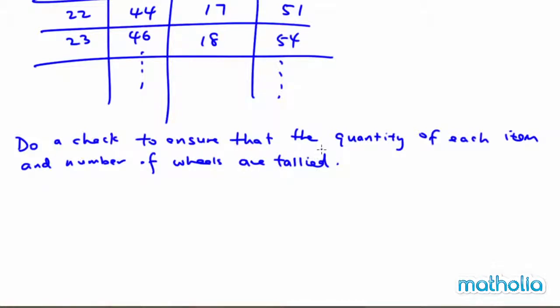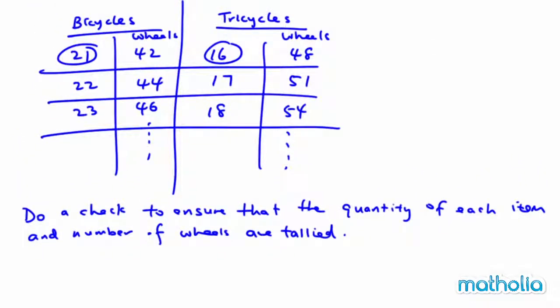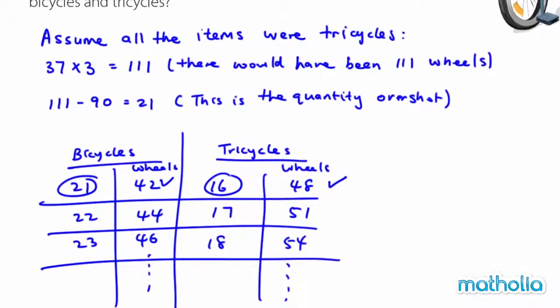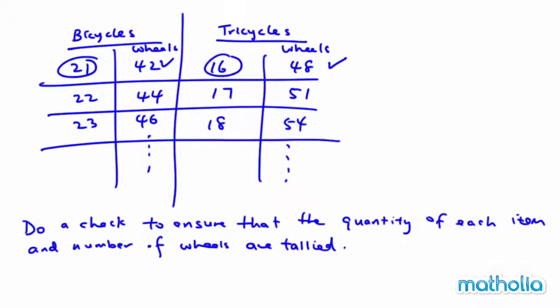I've identified the number of bicycles and tricycles, totalling 37. I need to check that the number of wheels is also 90. You see — 48 plus 42 equals 90. Number of bicycles and tricycles: 21 and 16, giving 37.